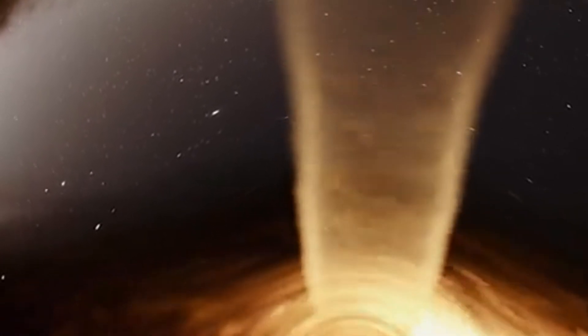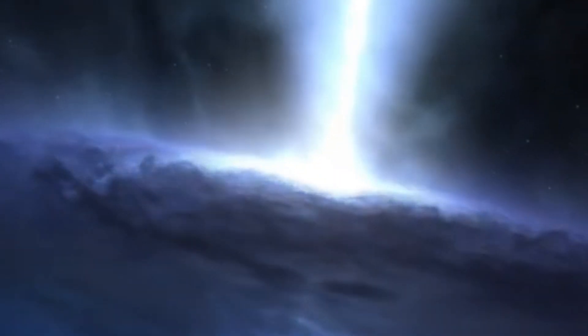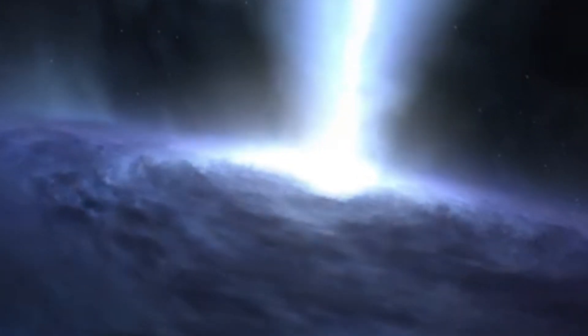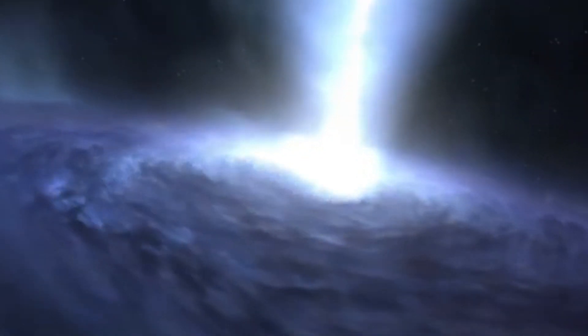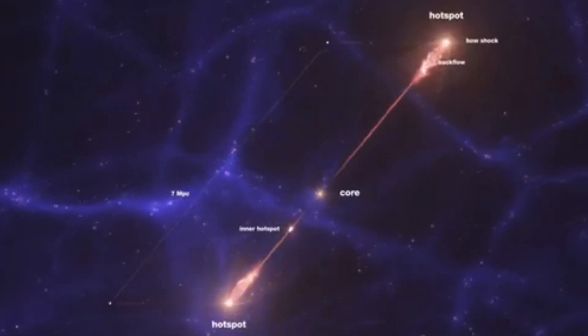As material falls toward a supermassive black hole, it forms a hot, swirling disk. Some of this material doesn't get sucked in, but instead is accelerated at nearly the speed of light, shooting out in two powerful beams from the poles of the black hole.